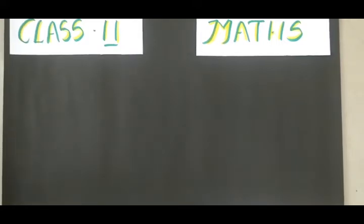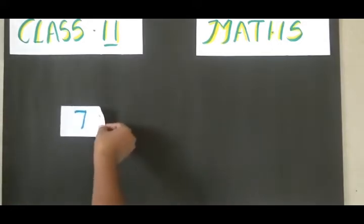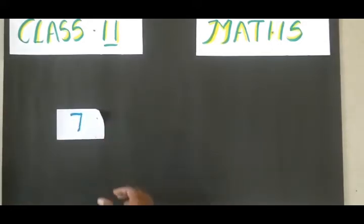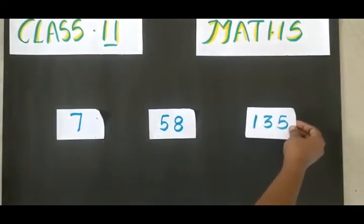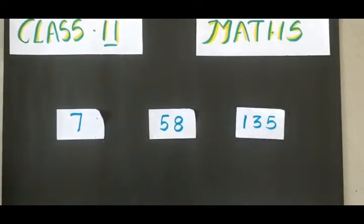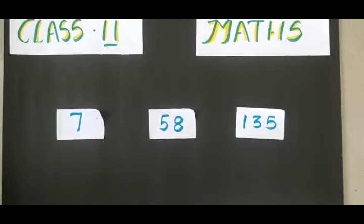So before that I am going to place some numbers to you. Can you read this number? It's number 7, number 58, and number 135. Here 7 is a one digit number, 58 is a two digit number, and 135 is a three digit number. Here we are dealing with the numbers: one digit, two digit, three digit.